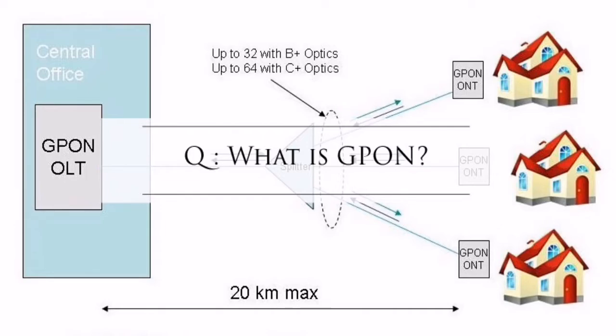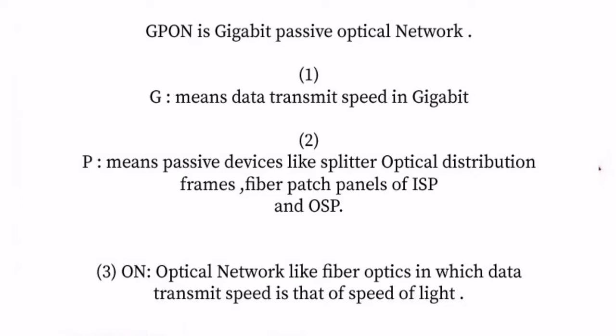This video is about G-PON. G-PON is basically a Gigabit Passive Optical Network. Breaking it down: G means data transmit speed in gigabit, P means passive devices like optical splitters, optical distribution frames, and fiber panels of ISP and OSP, and ON means optical network — like fiber optics — in which data is transmitted at the speed of light.